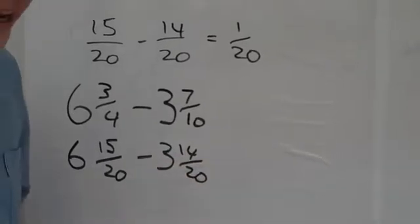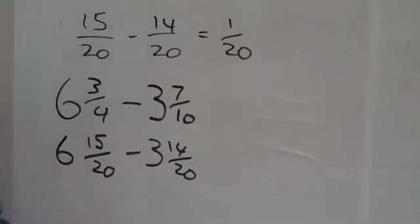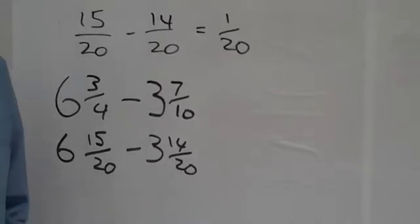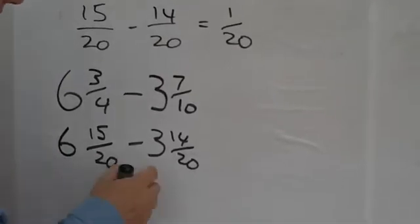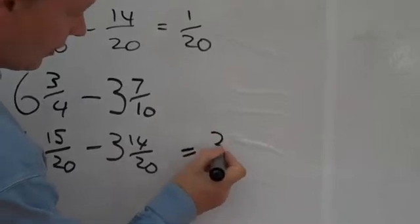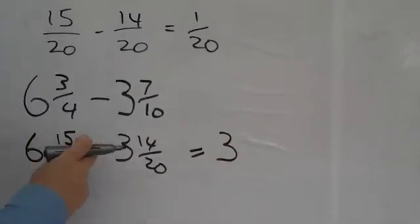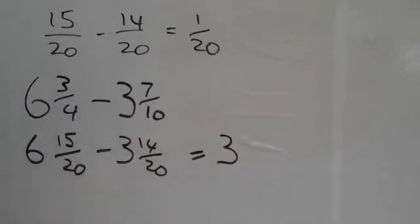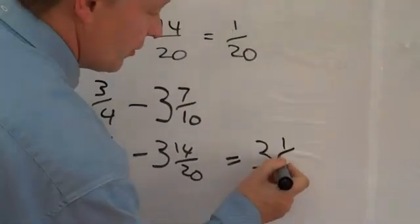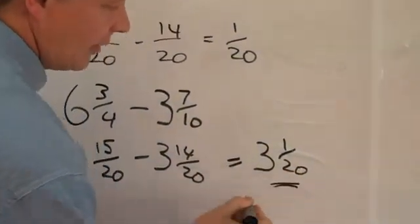Now the secret of this is to take away the whole ones first, and then take away the fractions afterwards. So six take away three equals three. Fifteen twentieths take away fourteen twentieths equals one twentieth. And there's your answer.